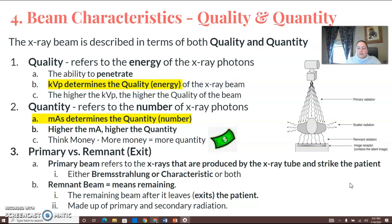Or to get the quality image and not get any image noise. So quantity is number, and that's going to be your MA. Quality is energy, and that's going to be your KVP.